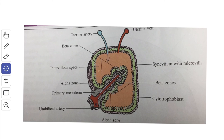Therefore, the human placenta is a discoid, deciduate, hemochorial, and villous type of labyrinthine organ.